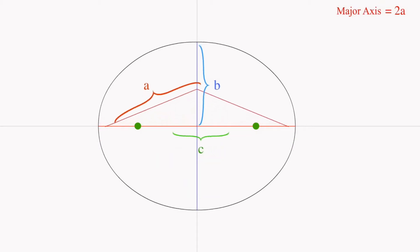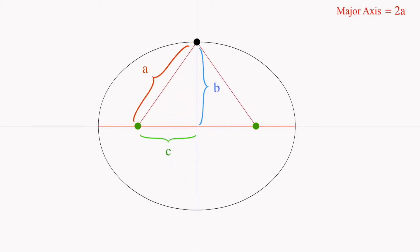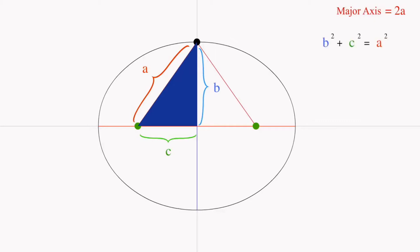When we extend the string evenly at the top, we want to form a triangle with sides A, B, and C. By the Pythagorean theorem, these sides have the relationship B squared plus C squared equals A squared, and moving C squared to the other side gives us that B squared equals A squared minus C squared.